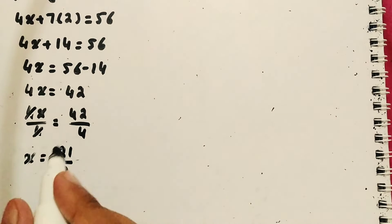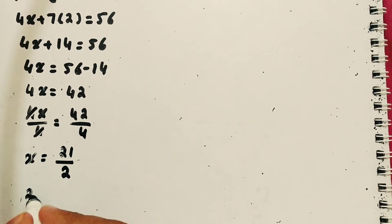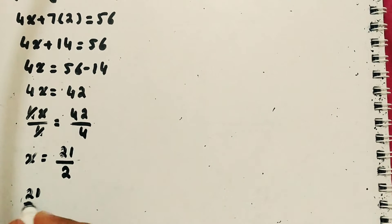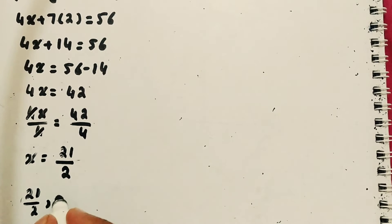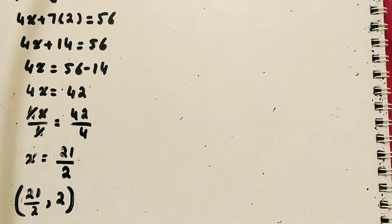Pehla ordered pair complete ho gaya: x = 21/2 aur y = 2.